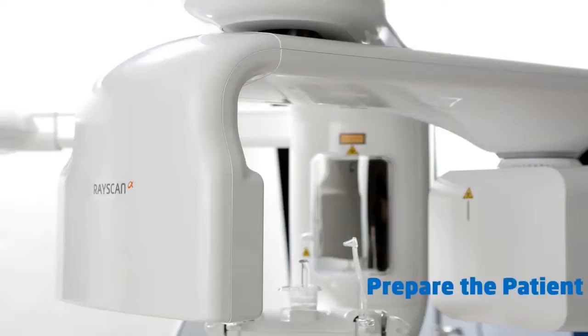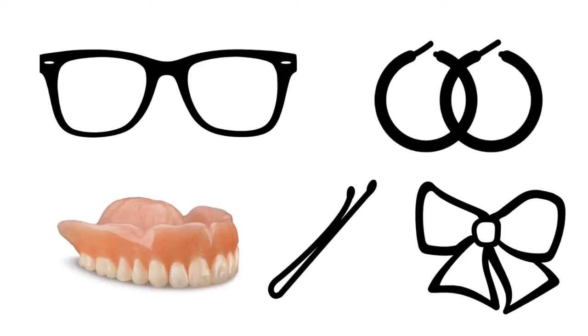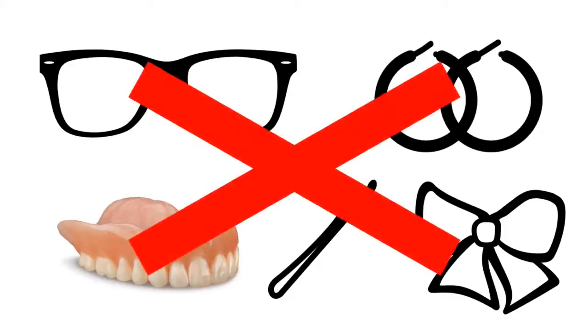Prepare the patient by asking them to remove glasses, false teeth, jewelry, hair clips, and pins. Place the protective lead apron over the patient's shoulders.